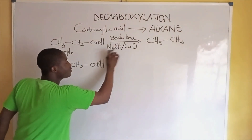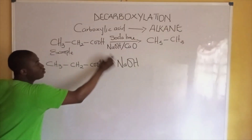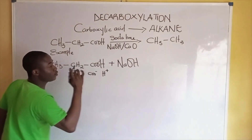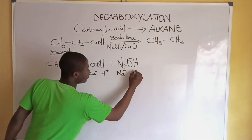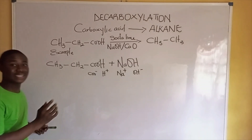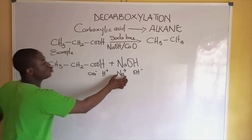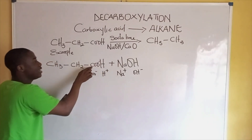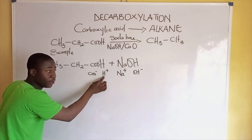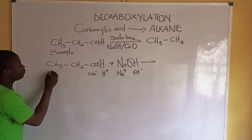Ionically, the carboxyl group becomes COO⁻ and H⁺, while the caustic soda ionically becomes a sodium ion and a hydroxide ion. According to Coulomb's law, like charges repel and unlike charges attract. So basically, the sodium ion attracts the carboxyl group, which is COO⁻, while the hydroxide ion attracts the hydrogen ion.